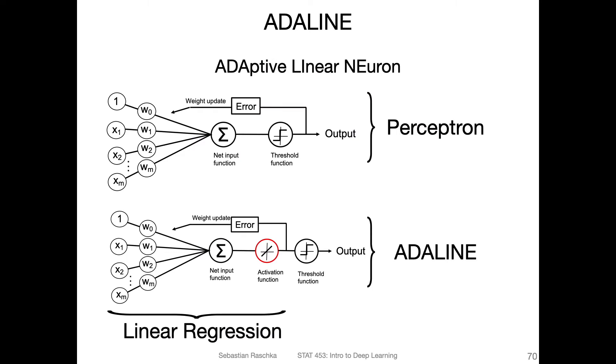Just for comparison, how the perceptron looked like. Recall in the perceptron, we compute the net input first, then we pass the net input through a threshold function, and the threshold function produces our output. The output is the predicted class label, which can be either zero or one.